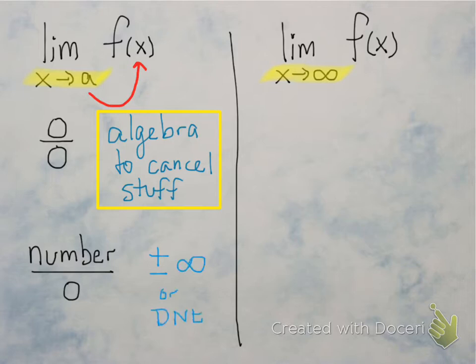Now if you get a number over 0 — so maybe 1 over 0 or negative 5 over 0 — your limit will be either positive or negative infinity, or maybe the limit will not exist. But it will only be one of these three options.